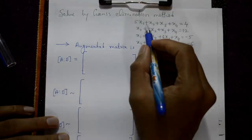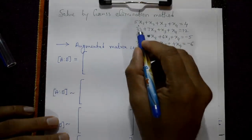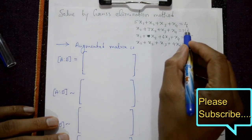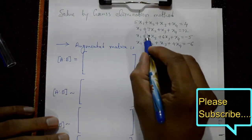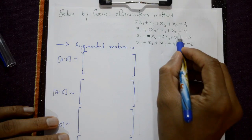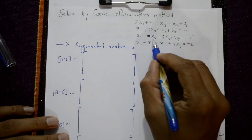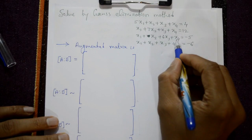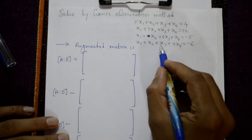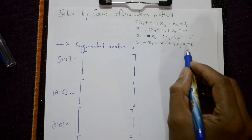Solve by the Gauss elimination method: 5x₁ + x₂ + x₃ + x₄ = 4; x₁ + 7x₂ + x₃ + x₄ = 12; x₁ + x₂ + 6x₃ + x₄ = -5; x₁ + x₂ + x₃ + 4x₄ = -6.